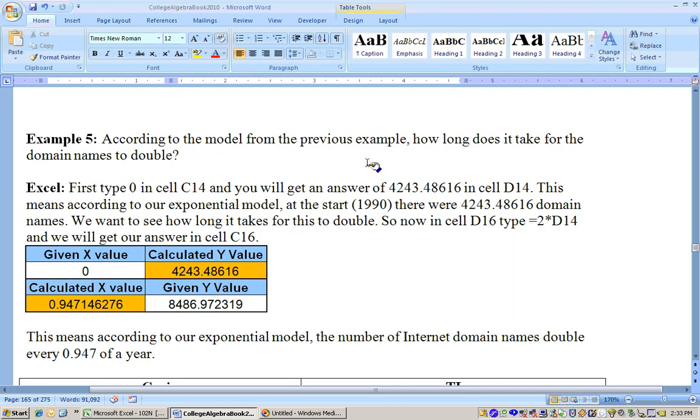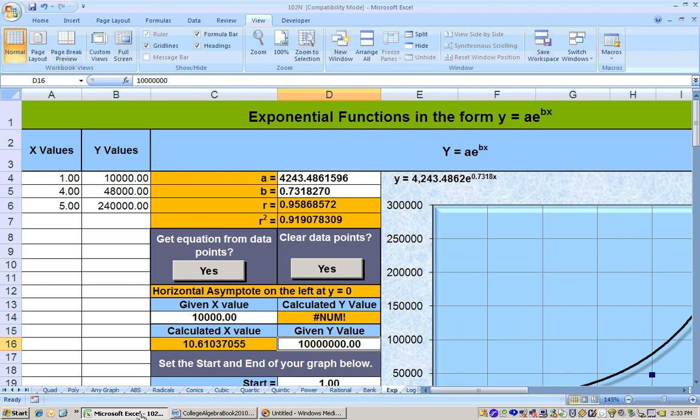Now on this problem, it says according to the model from the previous example, how long does it take the number of Internet domain names to double? So I would go to the Excel sheet. I already have the equation in, and the thing you want to do here is a two-step process. First of all, put zero in for x because that tells you how many there were at the start. Now to find out how long it takes this to double, let's put double that amount in there. We can do that by typing equals two times, and don't type in that number, just click on it. Hit enter, and we get twice the amount there, and it calculates it for us here that it doubles in 0.947 of a year.